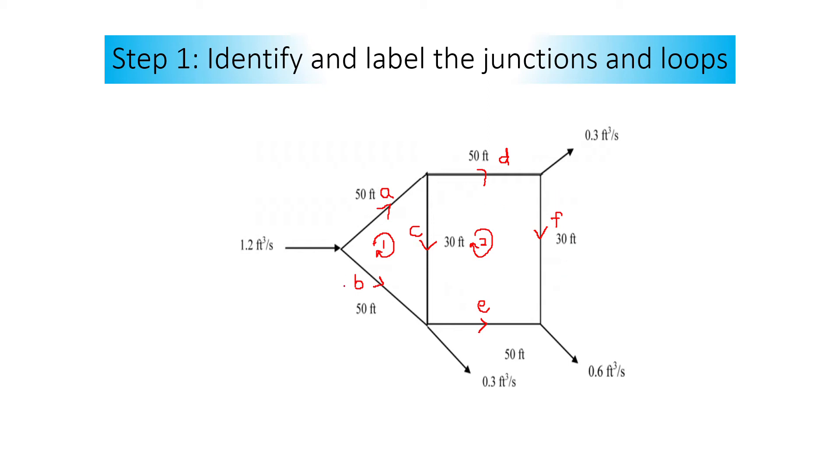It really depends on you. You can decide which pipe you want to label using what letters. This is the way I label my pipe. After you identify and label the junctions and loops, what is junctions? So this is the first junction. The junction means when the flow is coming from this direction, it will divide into two pipes. So this is what you call as junction.